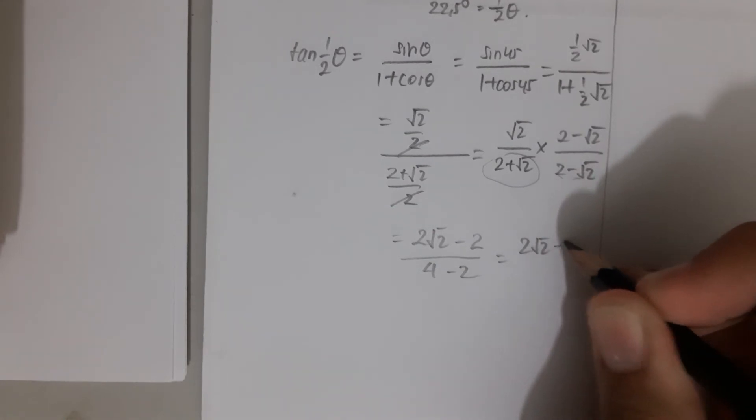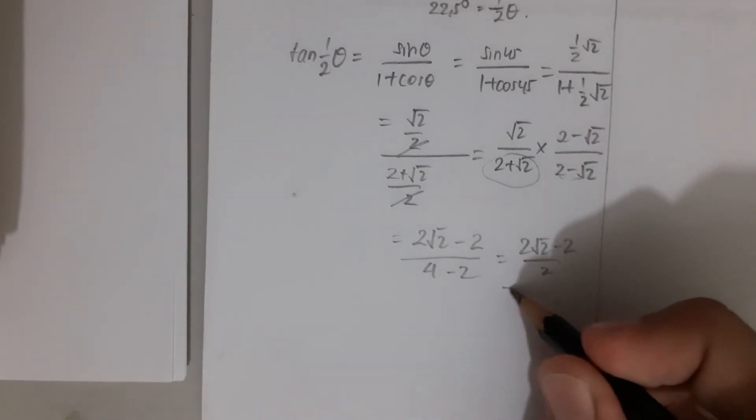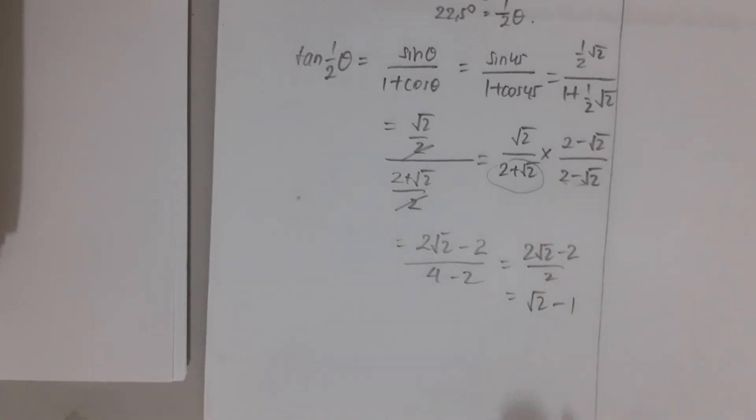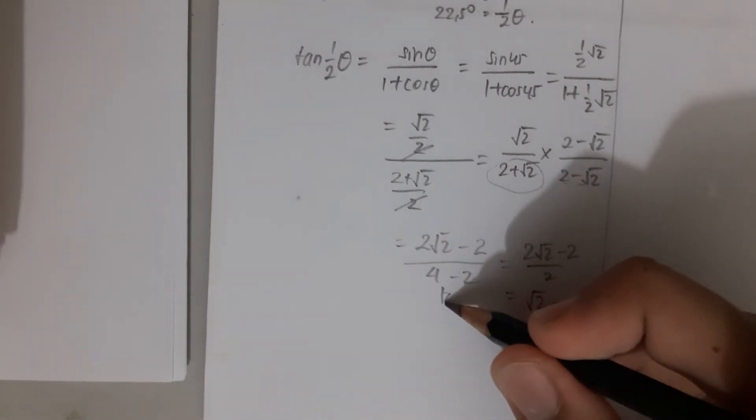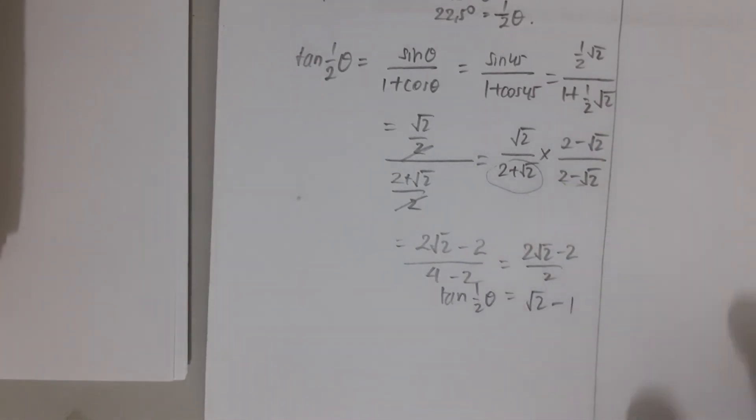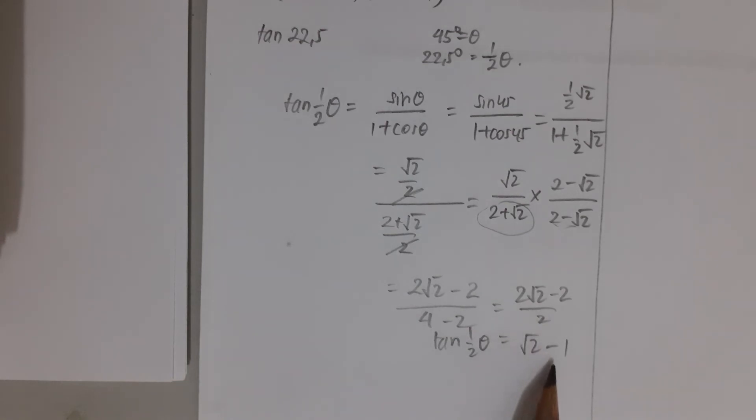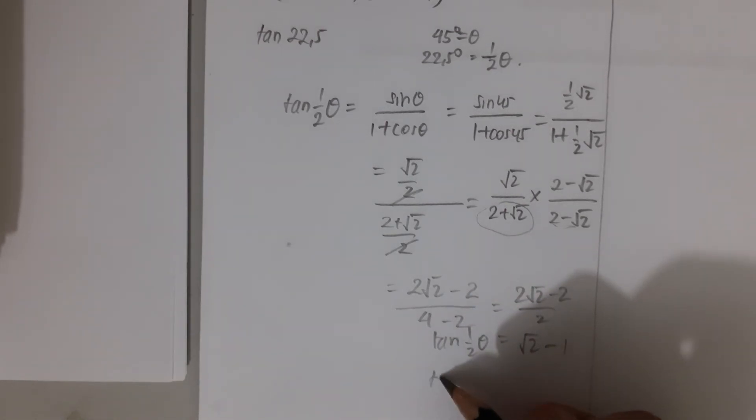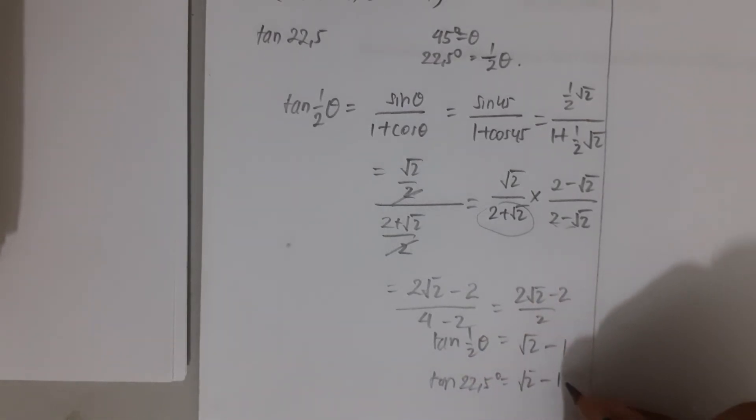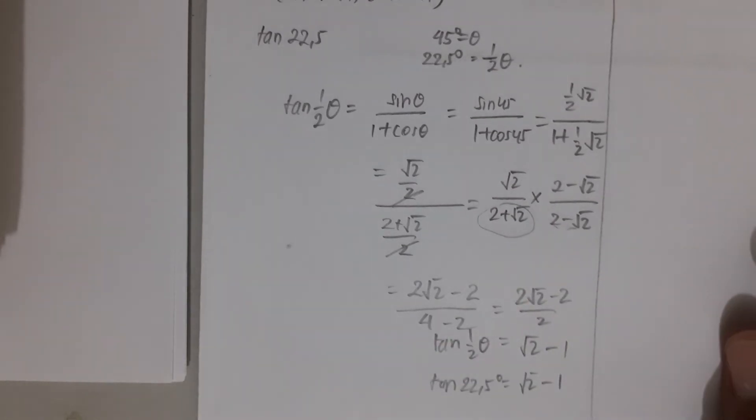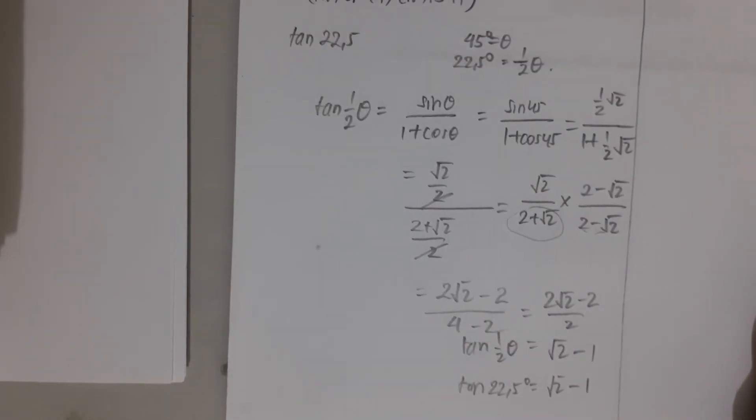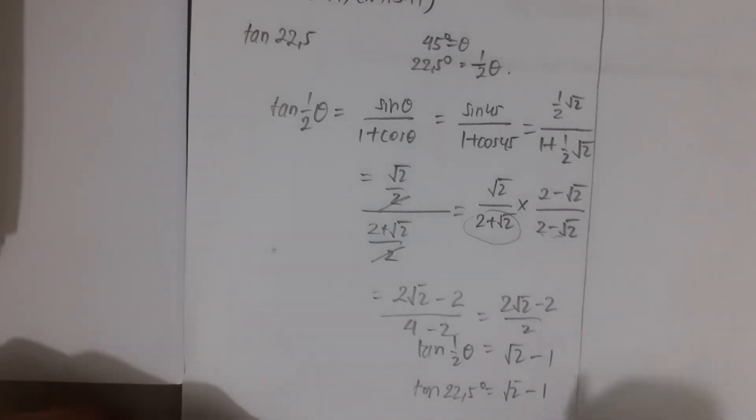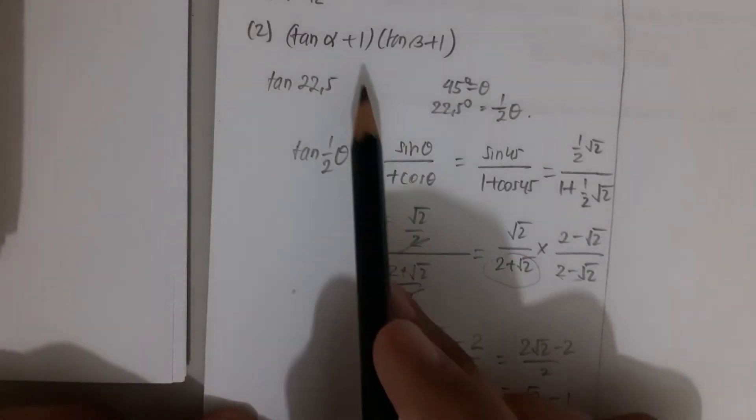We get (2√2 - 2) / 2, which is √2 - 1. So you can see that tan(θ/2) = √2 - 1, and we know that θ/2 is 22.5 degrees. Therefore, we can place the value of √2 - 1 into this bracket.